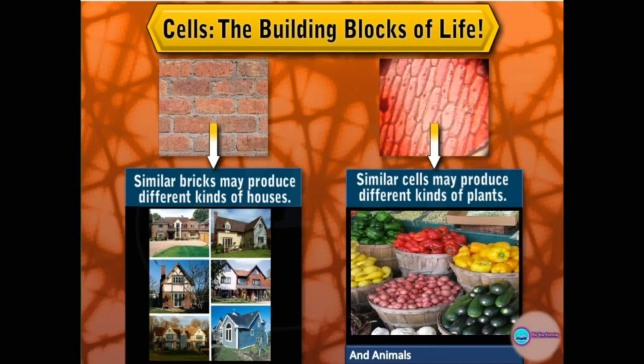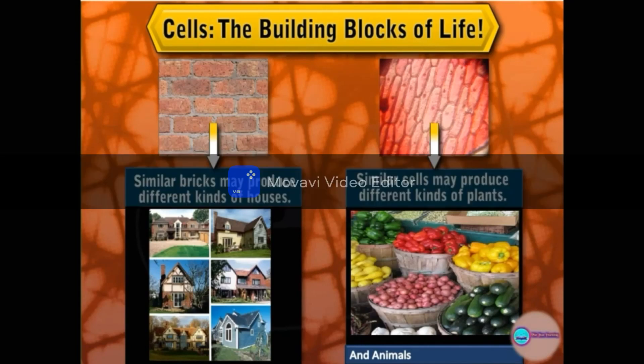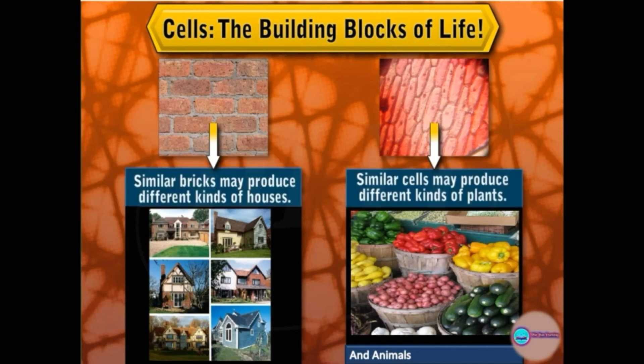Cell is comparable to bricks. For example, bricks in buildings are the basic structural units. Your home, school, hospitals, offices — all these buildings are made from bricks. So brick is the basic structural unit of all types of buildings. Like that, cells are the basic structural unit for all living organisms.